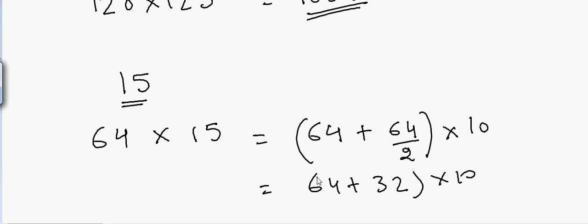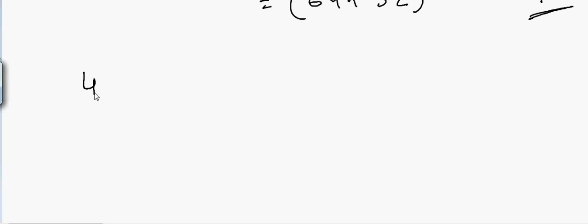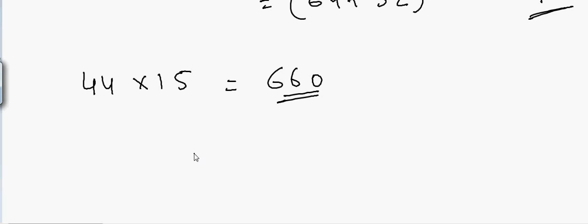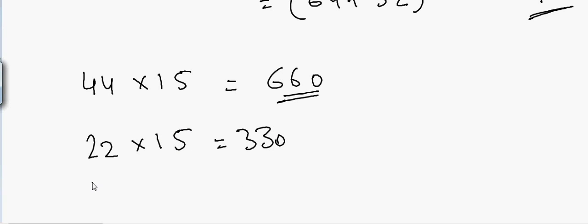Let's do it quickly. If I have 44 and want to multiply by 15 — half of 44 is 22, so 44 plus 22 is 66, and then a zero: 660. If I multiply 22 by 15, that will be 330. And if I multiply 66 by 15, that will be 990. I am using simple numbers, but you can always use more complicated numbers and do the same kind of calculations.